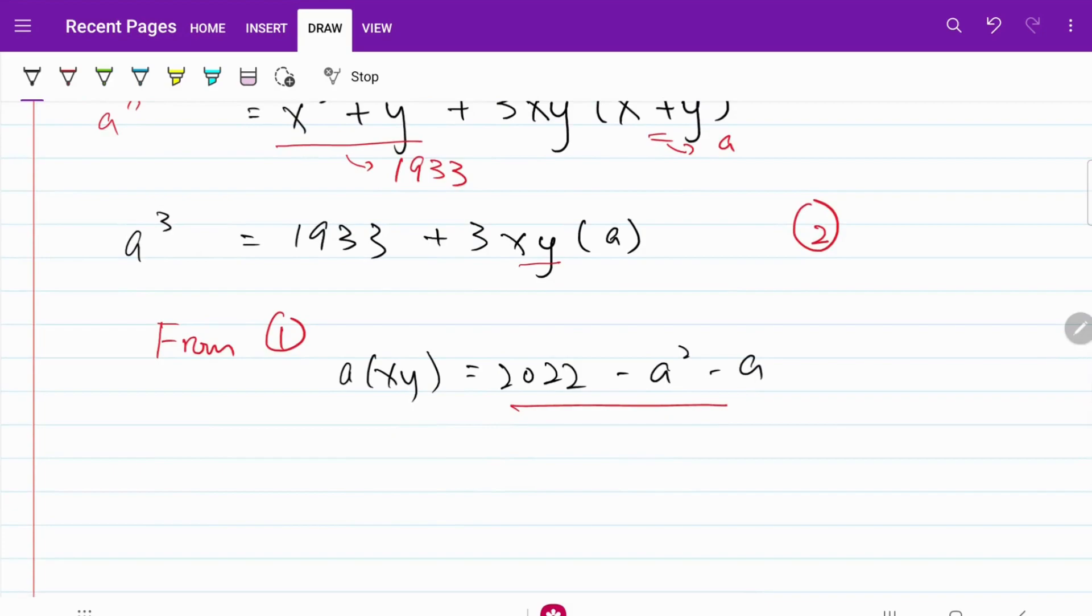I'm going to substitute this value right here into my a multiplied by xy on equation 2. So what I now have is a cubed is equal to 1933 plus 3 times 2022 minus a squared minus a.